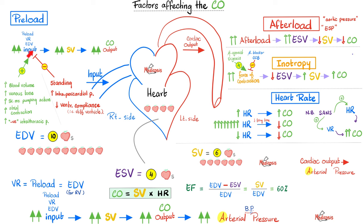Factors that decrease venous return or EDV: pericardial effusion or cardiac tamponade — accumulation of fluid or blood around the heart — or constrictive pericarditis where the pericardium is calcified as hard as a rock. The heart cannot relax and accept all the blood input, so preload goes down and cardiac output goes down. Similarly, if the ventricle itself is very stiff — as in restrictive cardiomyopathy caused by sarcoid, amyloid, hemochromatosis, cancer, or fibrosis — the heart cannot receive all that input, meaning less cardiac output.